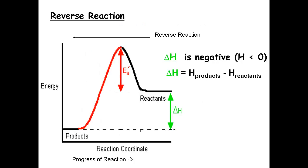If I look at this in reverse, look at what happens. When before this is my reactants becoming products, just read it right to left — this would become your reactants, this would become your products. We call this a prime, meaning if you ever see that prime, it's talking about it in the reverse direction. In the reverse direction, since I have more exothermic than endothermic, in the reverse reaction this would become an exothermic reaction.